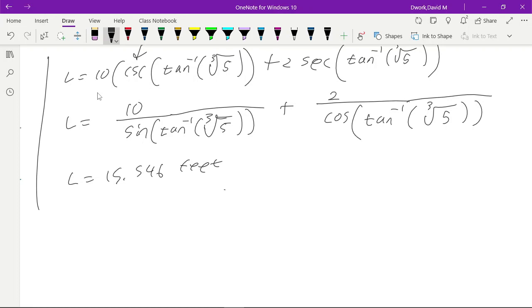So, there we are. So, now we have answered the question that's being asked. The value, the shortest length of the ladder could be when the height of the fence is 10 feet and the distance between the fence and the wall is 2 feet. Hope this makes sense.